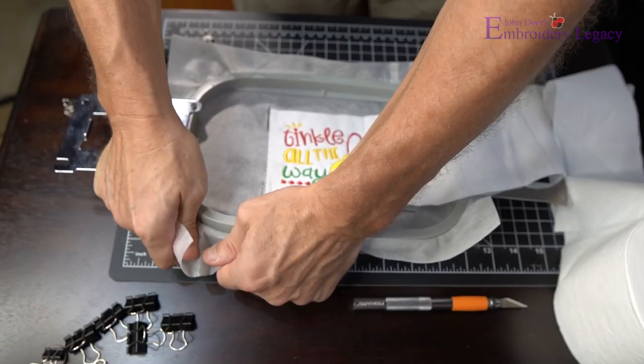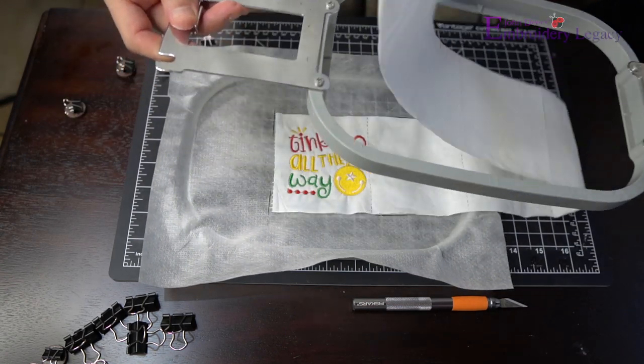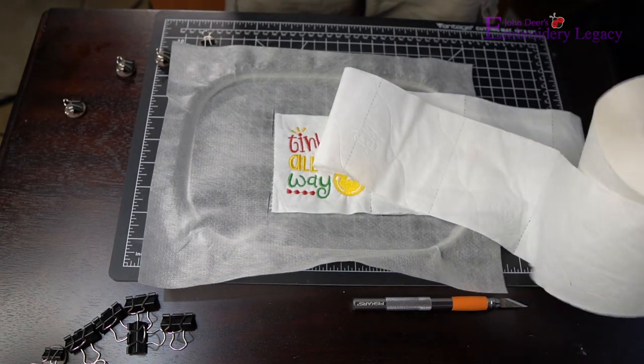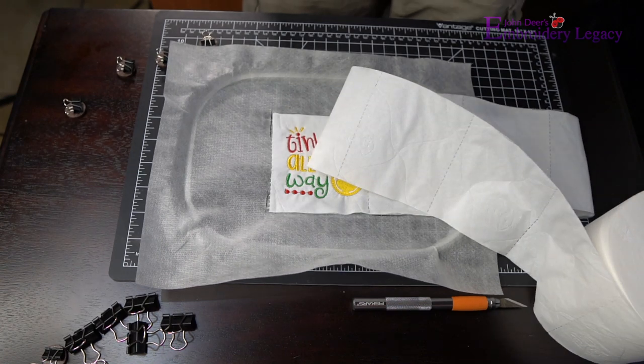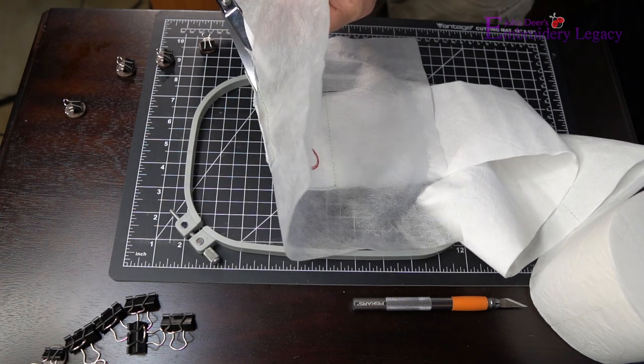Next we are going to remove the design from the hoop, being very careful not to tear the toilet paper. After the hoop has been removed, you can simply take a pair of scissors and cut away the no-show mesh stabilizer.